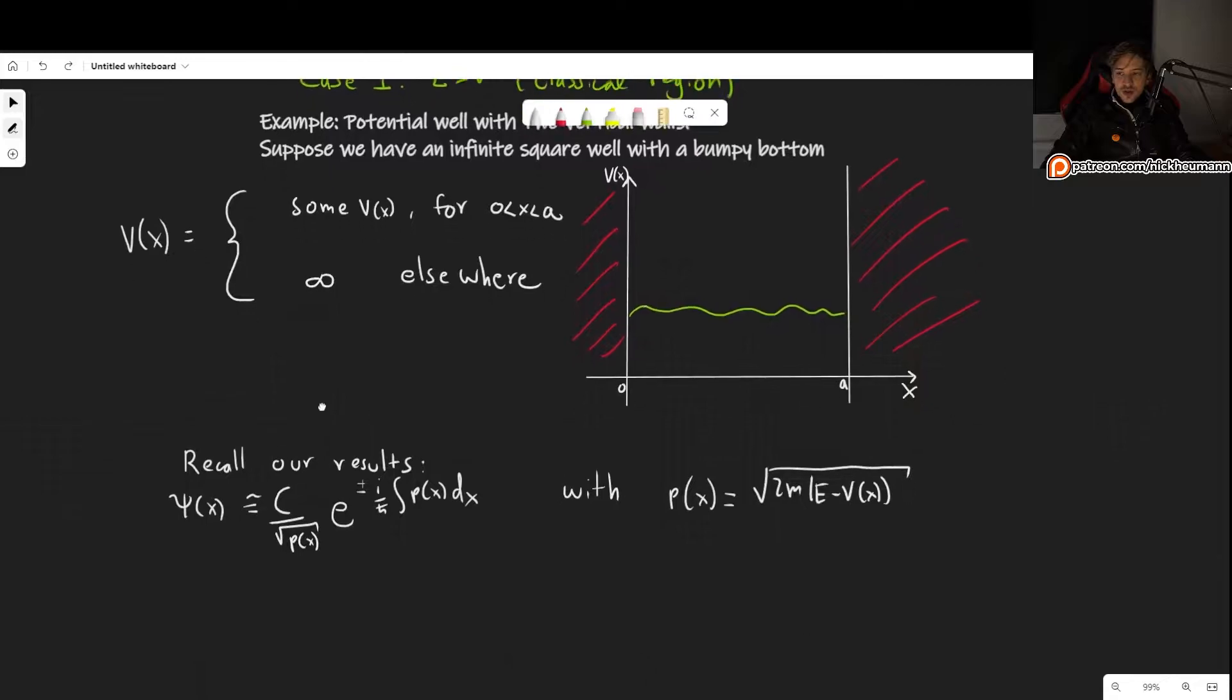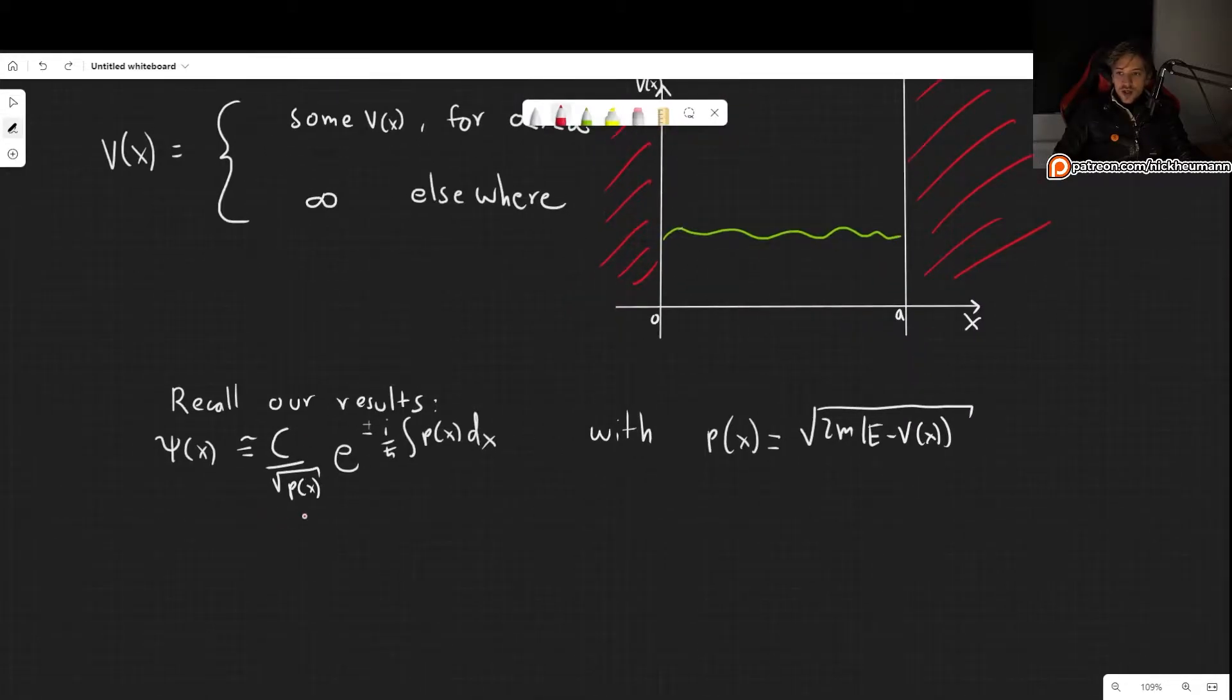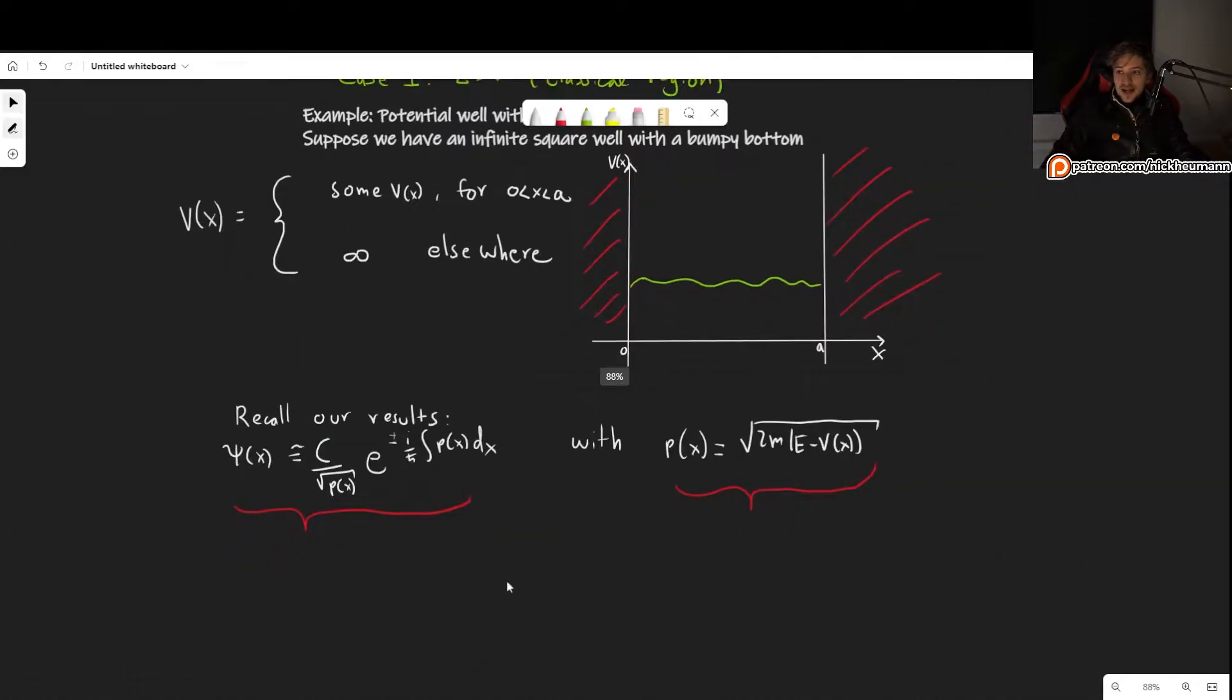Now let's recall the results that we found in the previous video. So we know that in this case our wave function according to the WKB approximation is this thing right here where the potential is the classical potential. So now what we want to do is go as far as we can go in this particular situation with these equations. So of course now we need to tell these equations which situation we are in. And how do we do that? Well let's give it our boundary conditions.